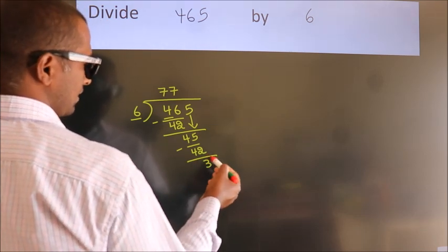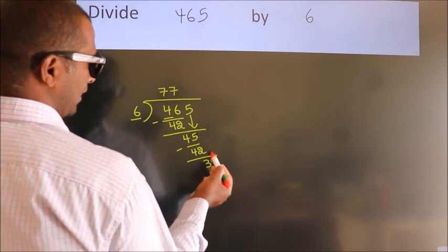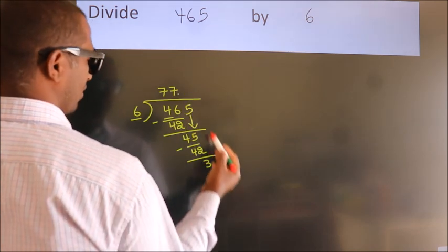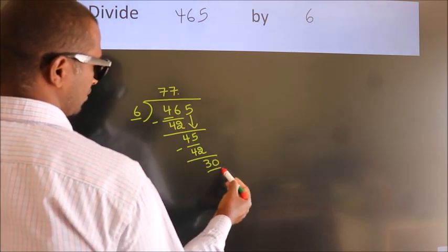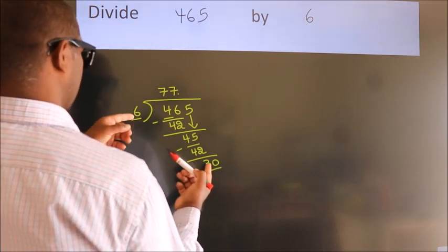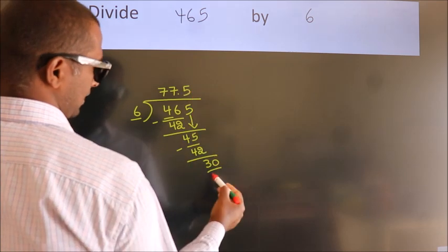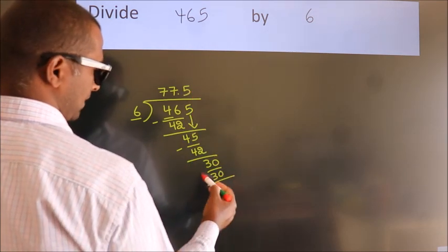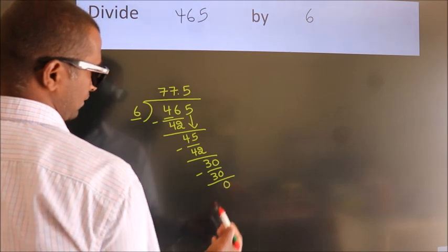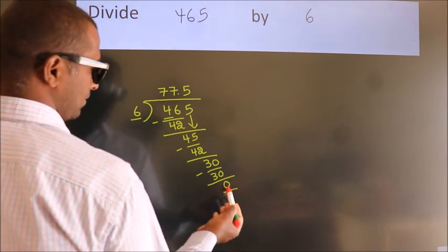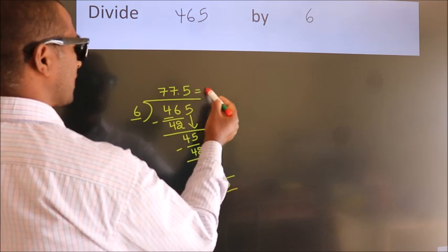After this, no more numbers to bring down. So what we do is we put a dot and take 0. So 30. When do we get 30? In 6 table, 6 times 5 equals 30. Now we subtract. We get 0. Here we got remainder 0. So this is our quotient.